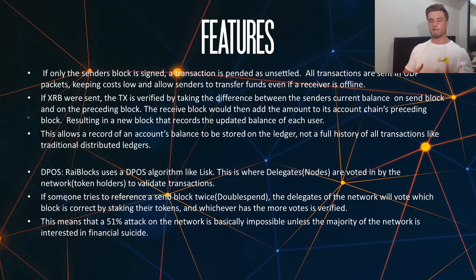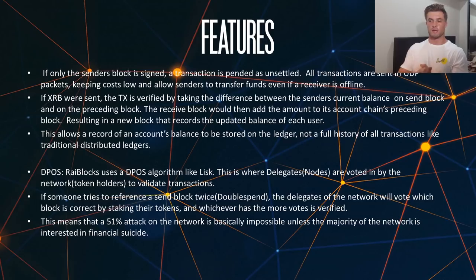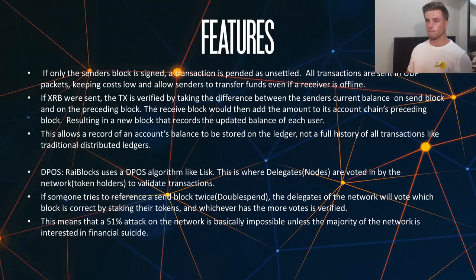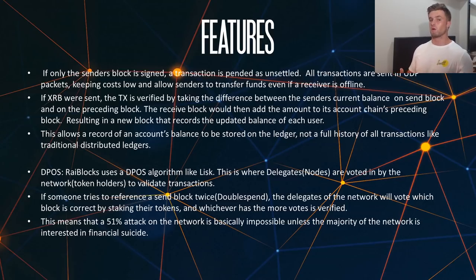The received block then adds the amount to its account based on the chain's preceding block — so if it went from 0 to 1, it calculates the difference and knows there is 1 in the account. This results in a new block that records the updated balance of each user. This allows a record of account balances to be stored on the main ledger, not a full history of transactions like traditional distributed ledgers such as a blockchain, making it much more streamlined and scalable — a very big key point for Ryblox and the block lattice.